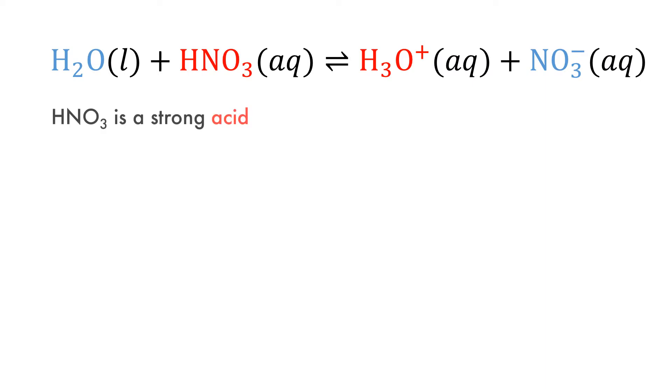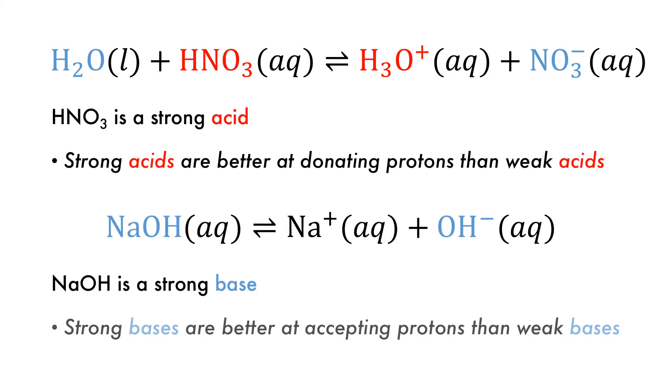A strong Brønsted-Lowry acid or base is one which dissociates completely in a solvent to form its constituent ions. Solvent choice is therefore important. A strong acid in water, such as nitric acid, may not be strong in other solvents. Strong acids and bases have weak conjugate pairs, and the equilibrium moves to form the weaker conjugate pair.